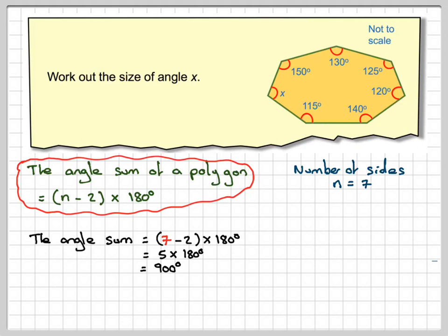So now we can make an equation. So we can say that x plus 115 plus 140 plus 120 plus 125 plus 130 plus 150 will be equal to 900.